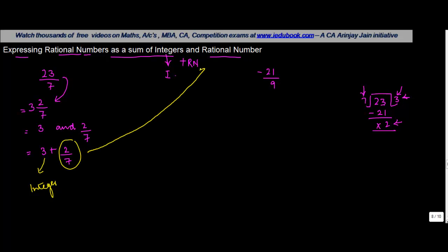Now let's see the second one — this is interesting. You have minus 21 upon 9. In cases where the rational number has a negative sign, you just keep this negative sign outside and then solve the rational number the way we did the normal one. So we divide 21 by 9 — 9 times 2 gives us 18.